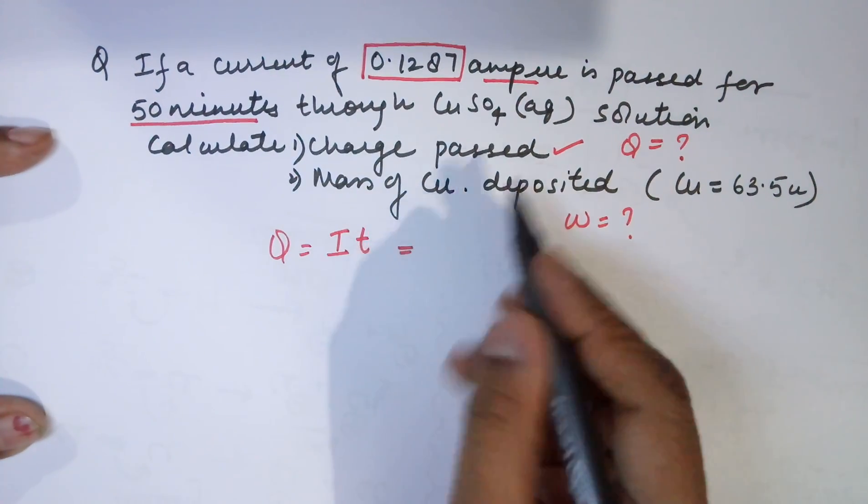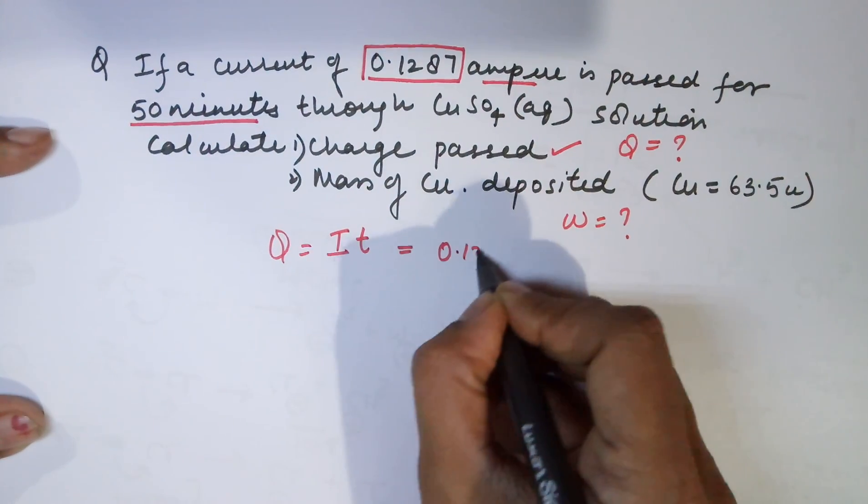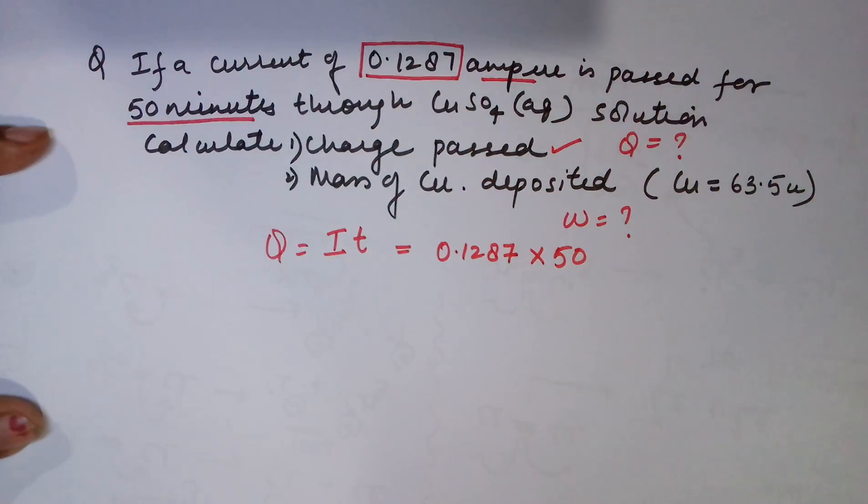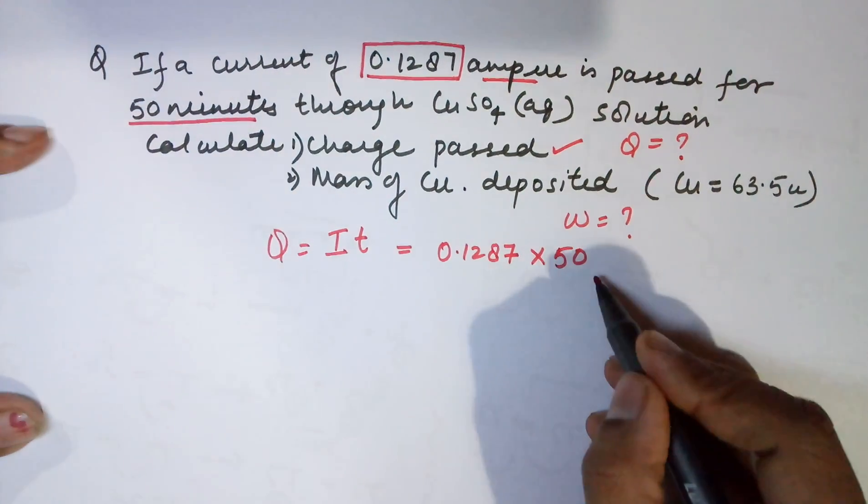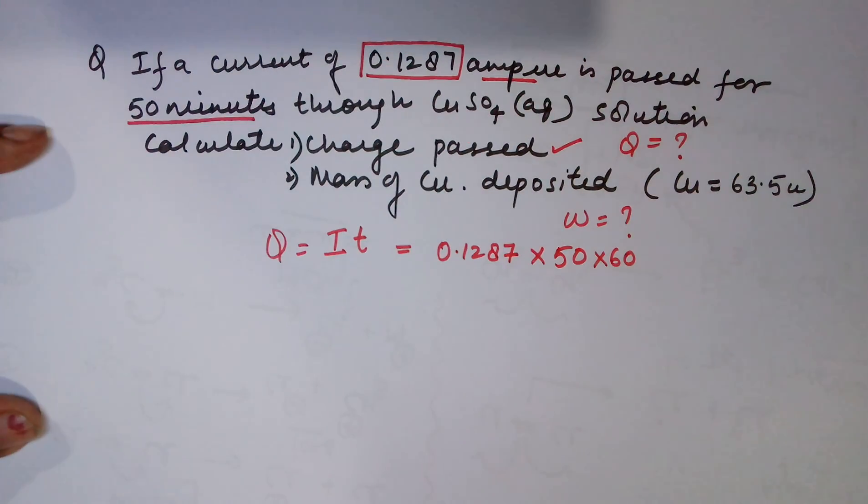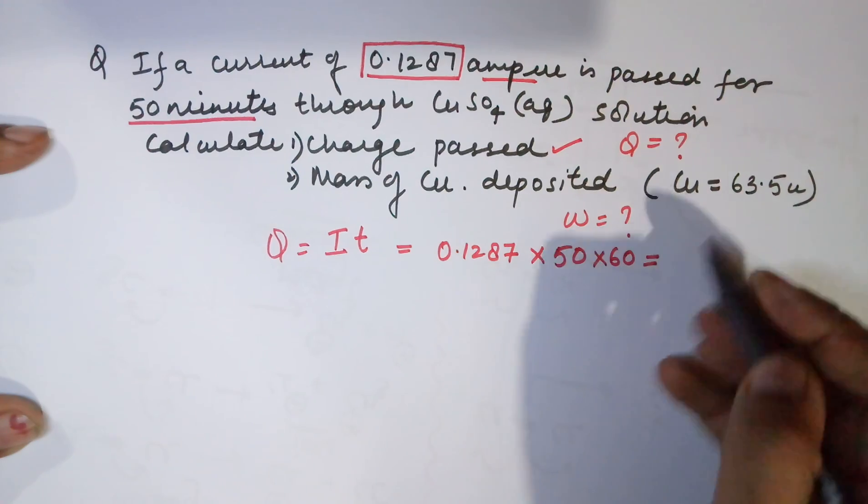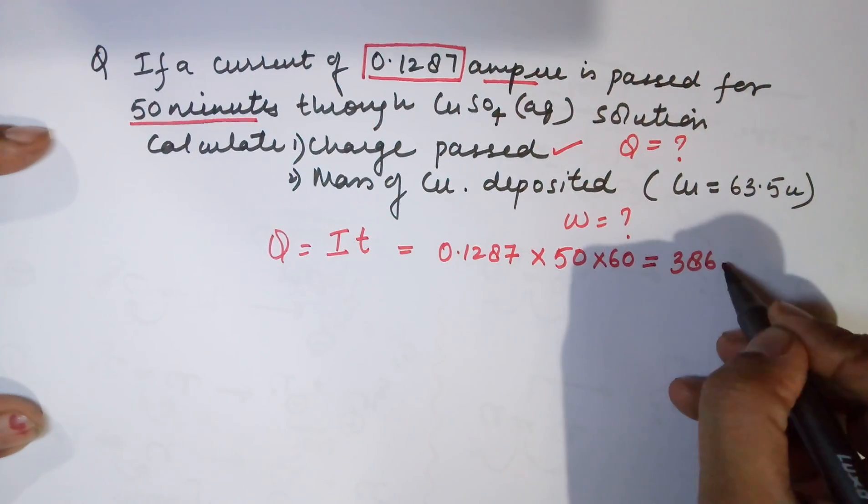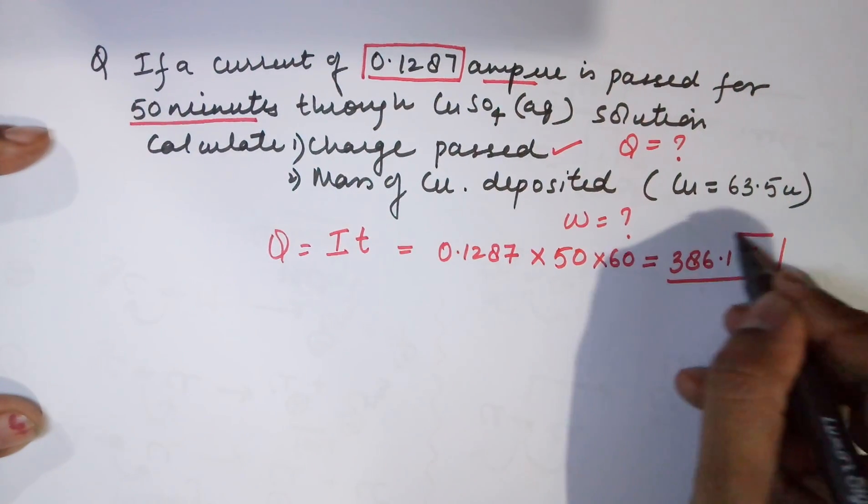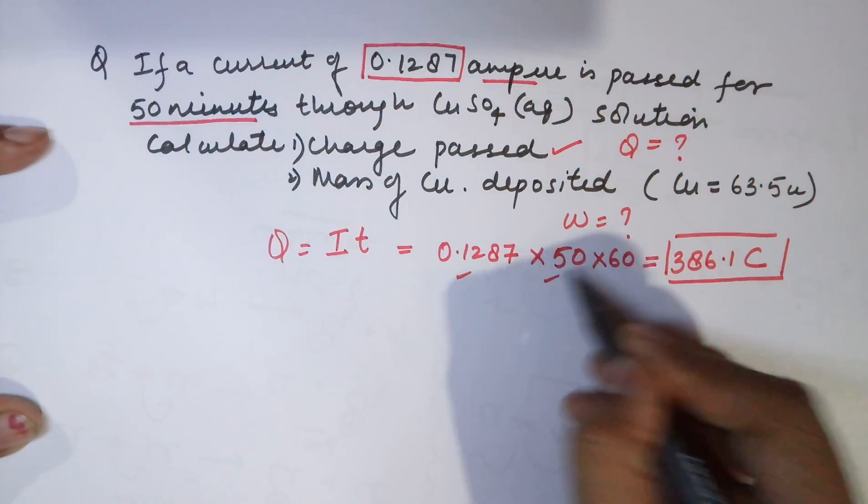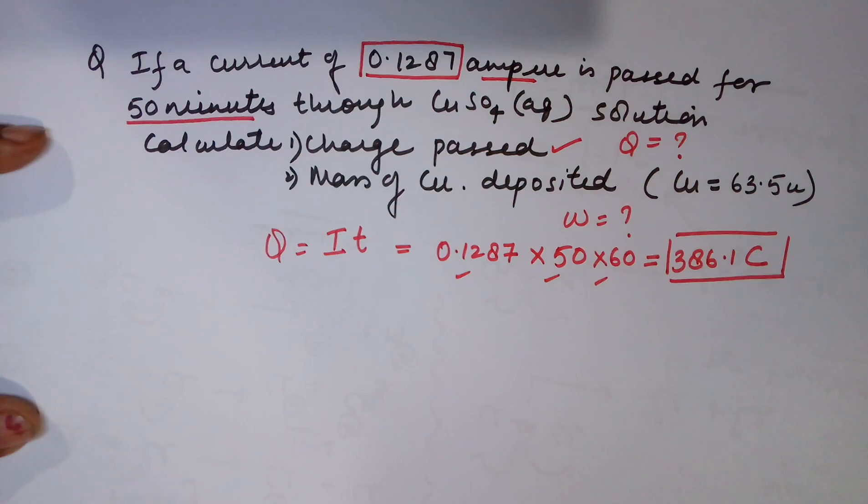Multiplying it, the current is 0.1287 multiplied by time. Time becomes 50. You cannot stop here. The time was given in minutes. Your requirement is in seconds. So don't forget, you need to put a 60 there. This value, when you multiply it by 60, your final answer would be 386.1 coulombs. I have used a calculator. You can verify the answer.